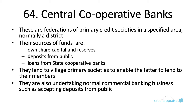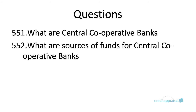Central cooperative banks are federations of primary credit societies in a specified area — normally at the district level, where all primary credit societies come under their umbrella. Sources of funds for central cooperative banks include their own share capital, deposits from the public, and loans from state cooperative banks. They lend to village primary societies, which in turn lend to members. They also undertake normal commercial banking activities like deposits and lending.